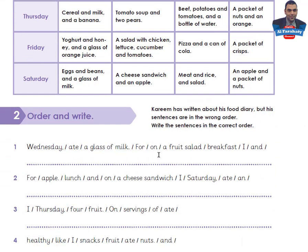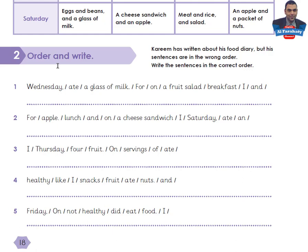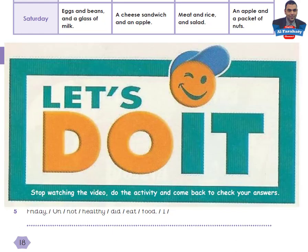Activity 2: Order and write. Kareem has written about his food diary, but his sentences are in the wrong order. Write the sentences in the correct order. You are asked to rearrange the sentences in order to write them correctly. Take your time to do the activity, then come back to check your answers.